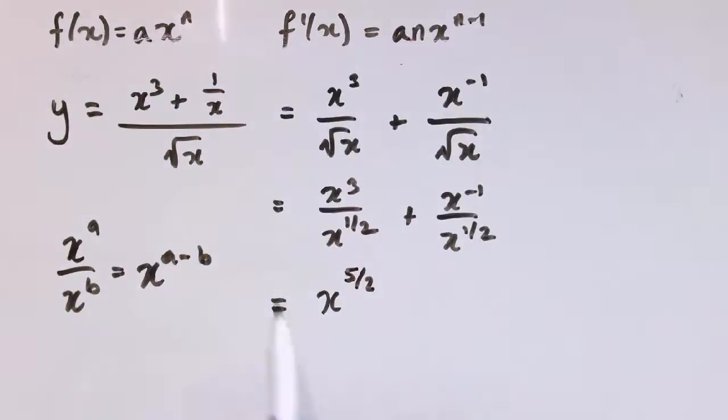That's right, that's 5 over 2. And here I get minus 1 minus 1/2. So that's minus 1 and 1/2. So that's x to the minus 3 over 2.